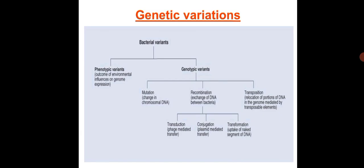Genetic variation leads to two types of variants: phenotypic variants and genotypic variants. Genotypic variants are produced either due to mutations, transpositions, or recombination.